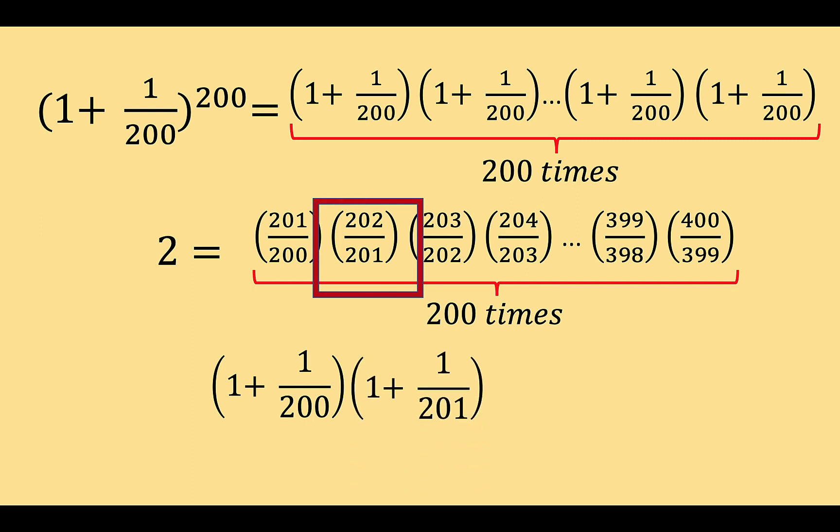Now the second factor, 202 over 201, can be written as a mixed number 1 plus 1 over 201. Then all this in the middle will have the same pattern. And then 399 over 398 is equal to 1 plus 1 over 398. And lastly, 400 over 399 is 1 plus 1 over 399. And this is equal to 2.